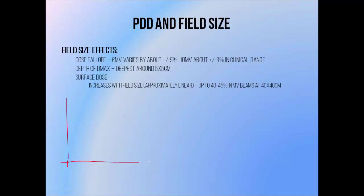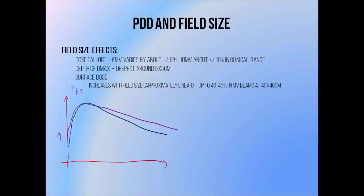PDD shape depends on radiation field size — that is, the size of the beam and the amount of material inside the beam. When we increase the field size we see three major effects. First, the surface dose increases. An MV beam with a 10x10 cm field will normally have a surface dose of 10–15%. When we increase to the maximum of 40x40 cm, it rises to about 40–45%, and tends to be highest in large field sizes with high beam energies. Second, the depth of maximum dose tends to move slightly towards the surface, being deepest at around 5x5 cm and becoming shallower if we increase or decrease the field size.